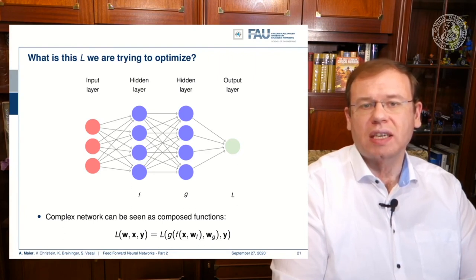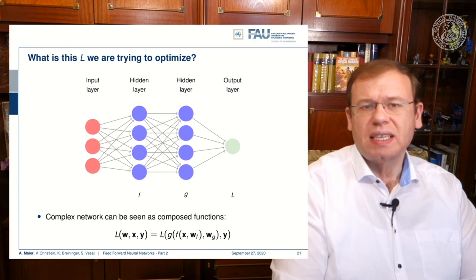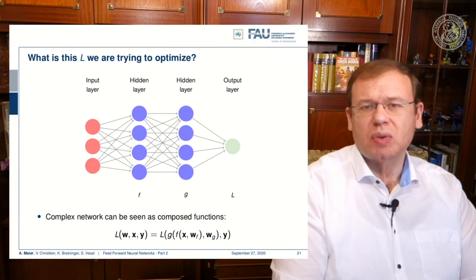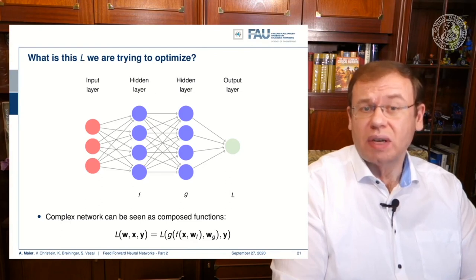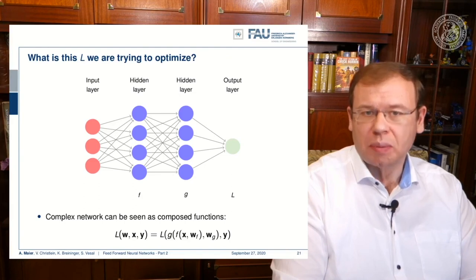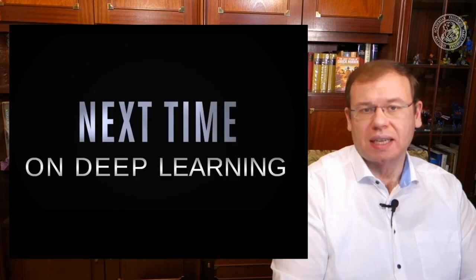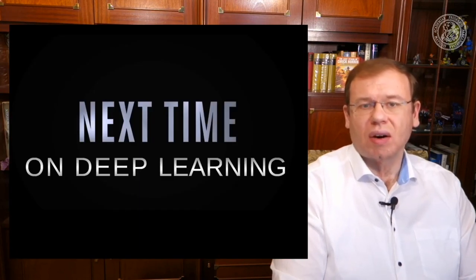So this is essentially what we need to compute in the loss function. You see that this is slightly more difficult and it gets more difficult for deeper networks. So we see that we need to be able to do this efficiently. There's a very efficient algorithm to solve such kind of problems and it's called the backpropagation algorithm, which will be the topic of our next lecture. So thank you very much for listening and see you in the next video.